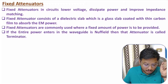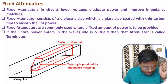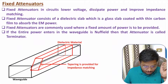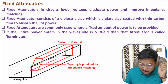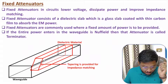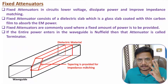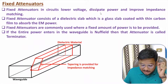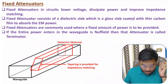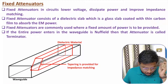Now let me show the structure of a fixed attenuator. The waveguide is shown in black, and inside it we have a dielectric slab shown in red. This dielectric material is a glass slab coated with a thin carbon film, used to absorb EM power. At one end, there is tapering of the dielectric material, which is provided to achieve impedance matching. So the three basic functions of a fixed attenuator are: lowering voltage, dissipating power, and providing impedance matching through this tapering.